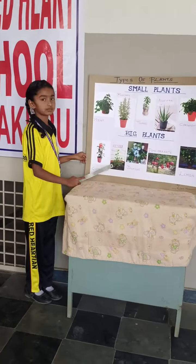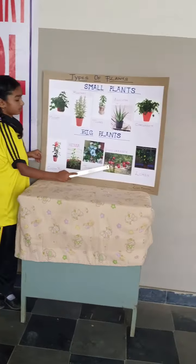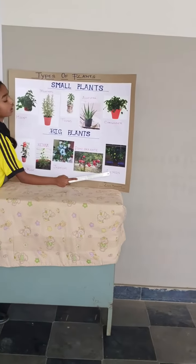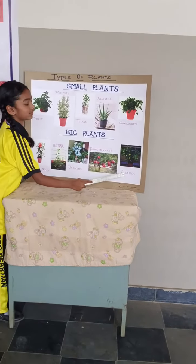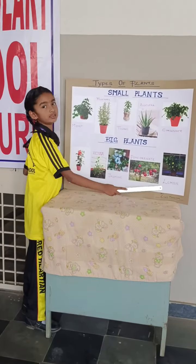Big plants are: Chinaro, Enna, Pomegranate, Plamen.